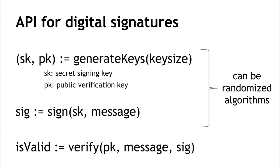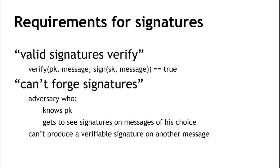The requirements for signatures are: first, valid signatures verify — if I sign a message with SK, then verifying with PK and the same message will validate correctly. Second, it's impossible to forge signatures. An adversary who knows your public key and gets to see signatures on some other messages can't forge your signature on a message he wants to forge it on. This unforgeability property is formulated in terms of a game between a challenger and an attacker.